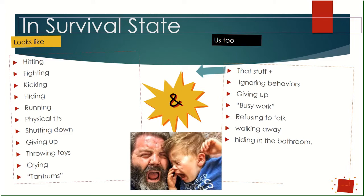At work, survival state probably looks like ignoring the behavior, giving up — 'I'm tired of this kid doing this, I'm just going to completely ignore it and walk away.' Busy work — stocking the forks, organizing papers instead of being with the kids. It's cell phones. Raise your hand if you escape while you're working by looking at your cell phone. We all do it, or we know people who do it when things get stressful. Staff look for ways to escape — hiding in the bathroom. That's survival state.